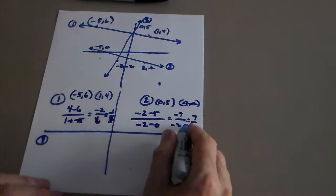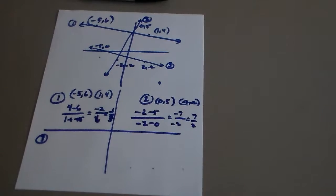So if I have negative one-third and seven halves, I know they're not perpendicular. Let's try three.